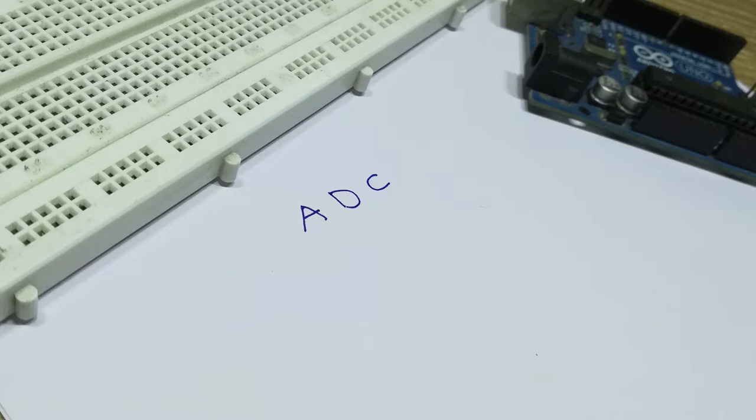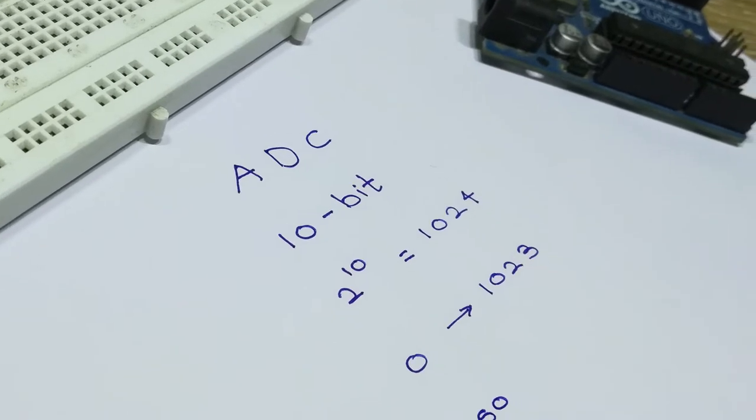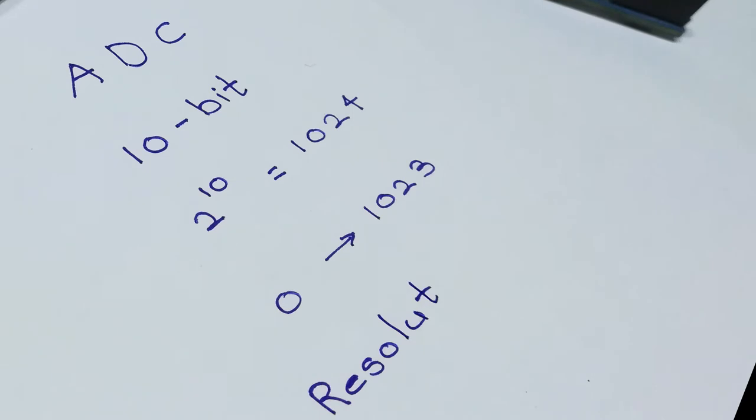Atmega328, which is the brain of this Arduino, has a 6 channel 10 bit ADC. This means that it will map input voltages from 0 to 5 volts into integer values from 0 to 1023, which gives a resolution of 4.9mV per unit.